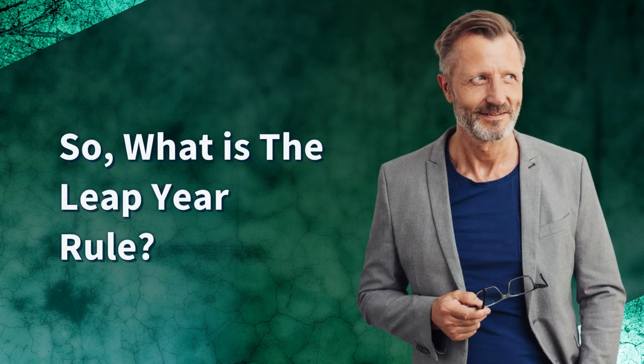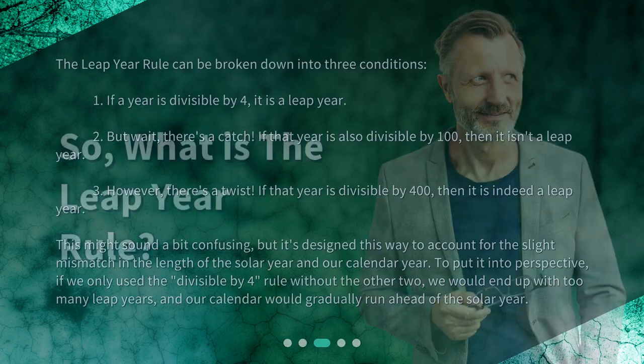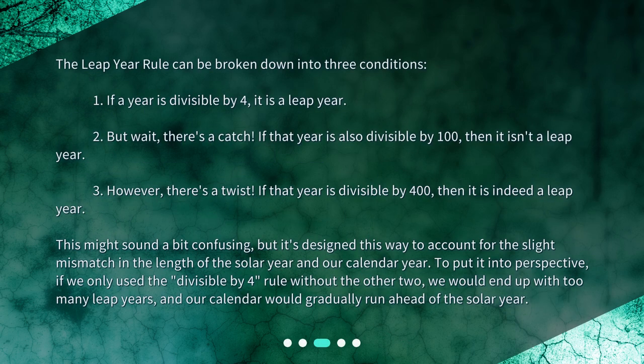So, what is the leap year rule? The leap year rule can be broken down into three conditions. First, if a year is divisible by 4, it is a leap year.